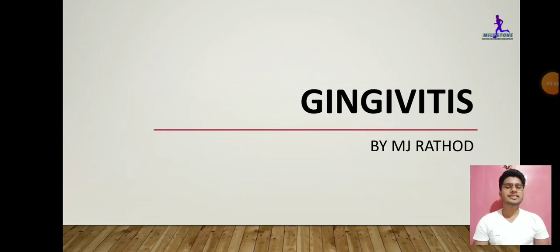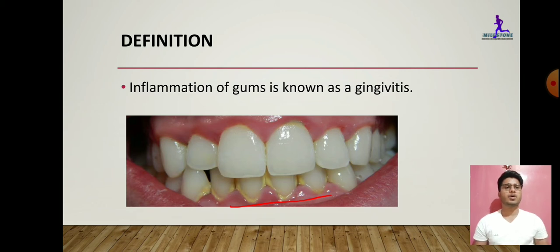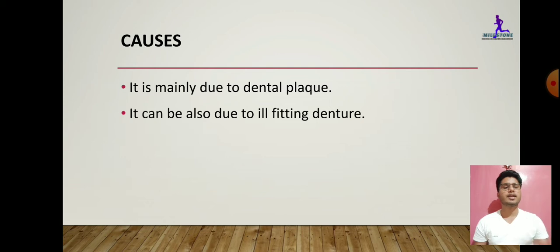This is a concise lecture on gingivitis. The term itself breaks down as follows: 'gingiva' means gum, and '-itis' stands for inflammation. So gingivitis is an inflammation and infection of the gingiva or gum. Importantly, it is a non-destructive inflammation of the gingiva. In the image shown, the red line marks the inflamed area — the inflamed gum or inflamed gingiva.